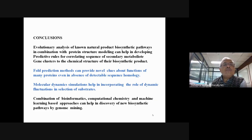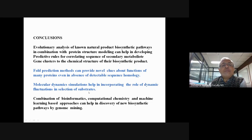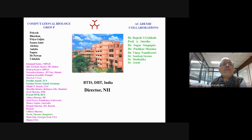In conclusion, evolutionary analysis of known natural product biosynthetic pathways combined with protein structure modeling can help develop predictive rules correlating secondary metabolite gene cluster sequences to their chemical structures. Combining bioinformatics, computational chemistry, and machine learning approaches enables discovery of new biosynthetic pathways by genome mining. I thank the contributors: Priya, Sana Amir, earlier students, and collaborators.